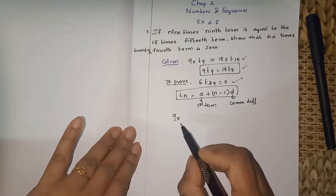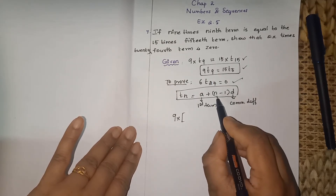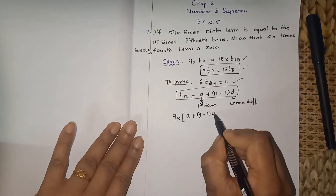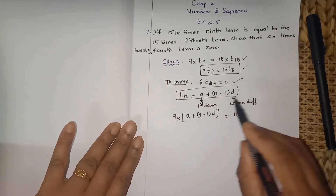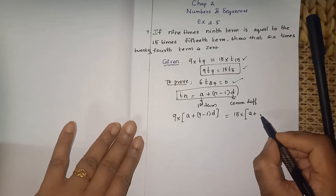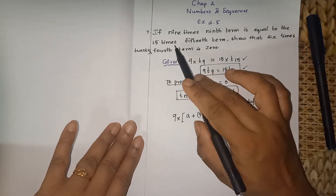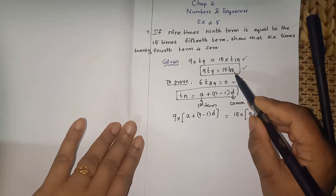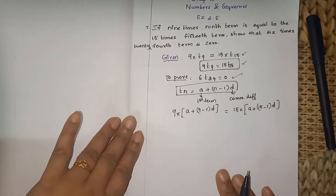How will you write 9 into t9? Open the bracket: n is 9 here, so a plus (9 minus 1) into d. Close the bracket. This equals 15 into t15: open the bracket, n is 15 here, so a plus (15 minus 1) into d. Be careful when you write the data.